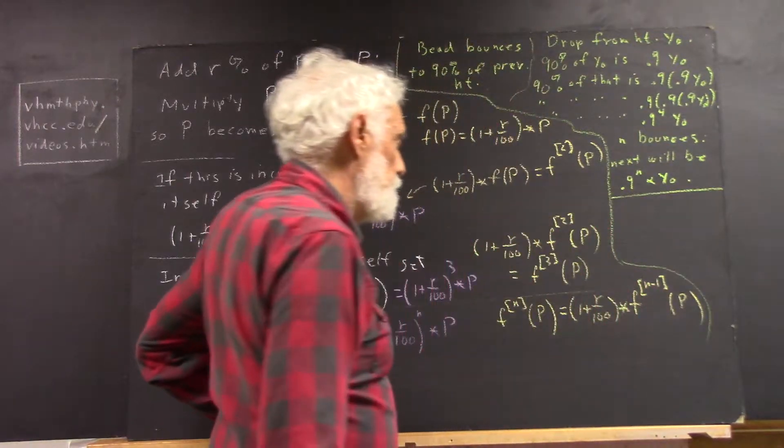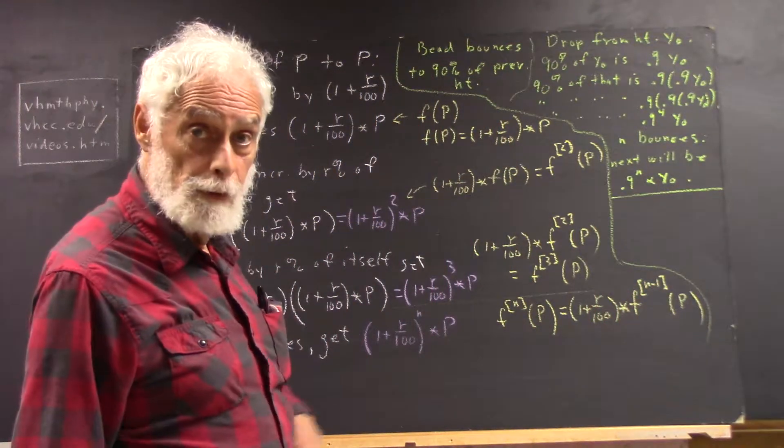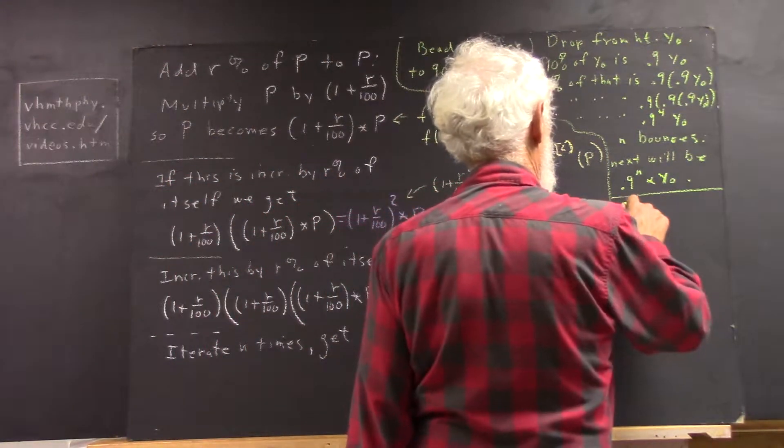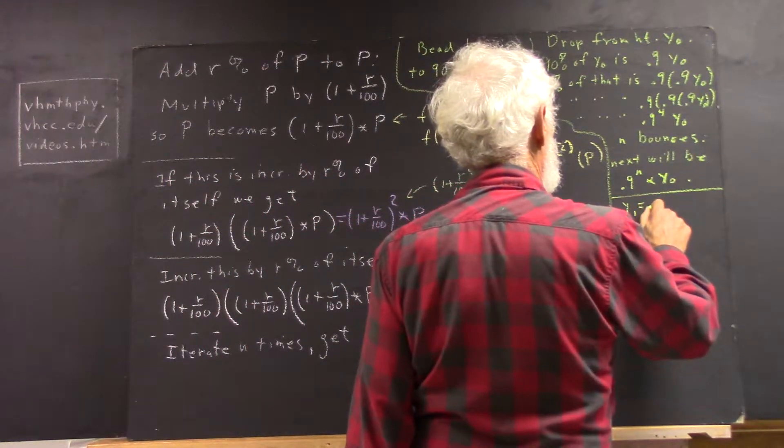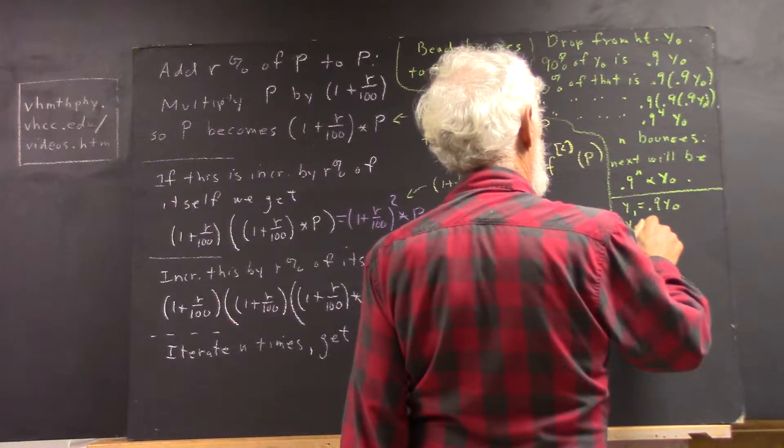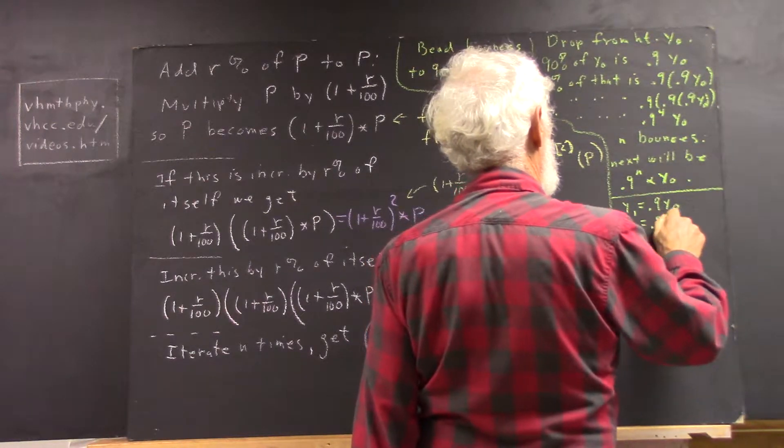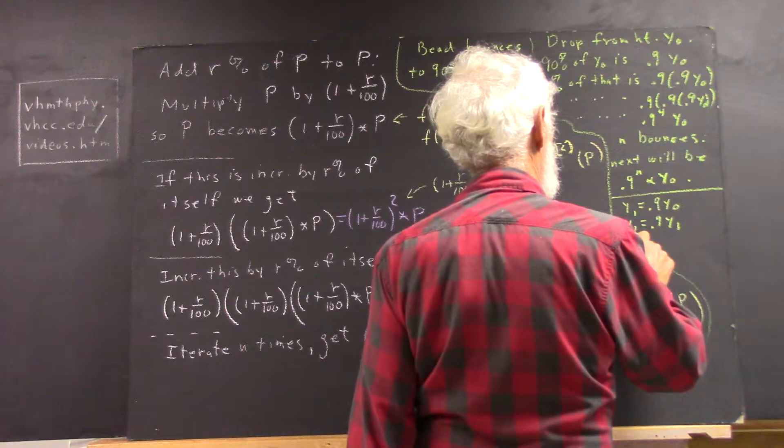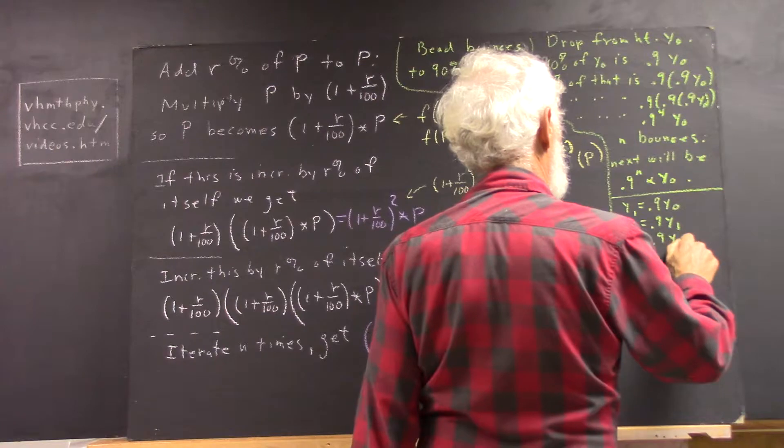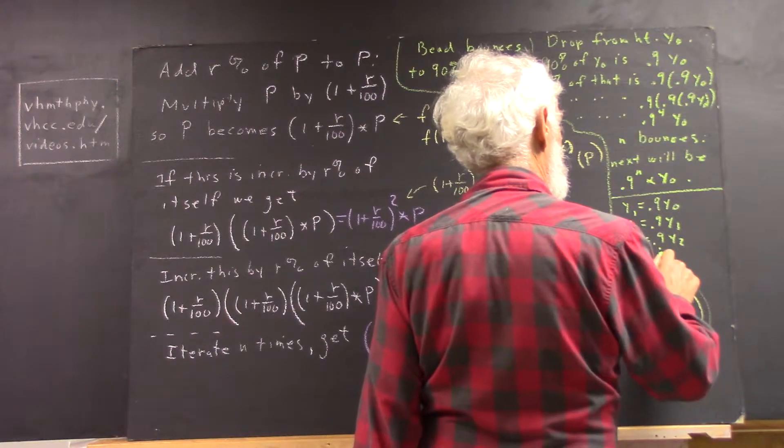Another analogous bit of notation that might or might not be useful. You probably don't need it. But we could say that y1 equals 0.9 y0, y2 equals 0.9 y1, y3 equals 0.9 y2, etc.